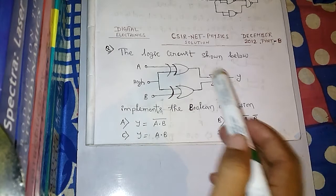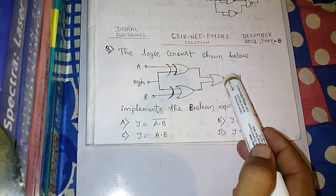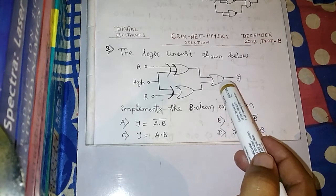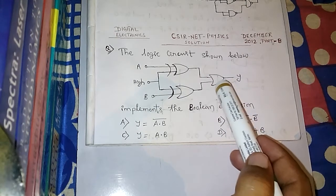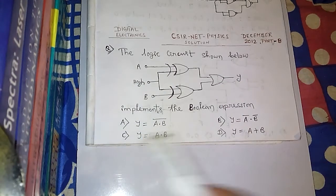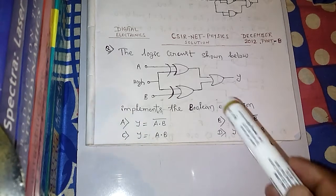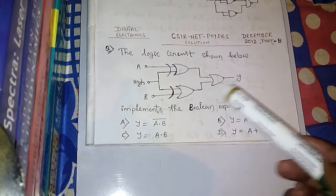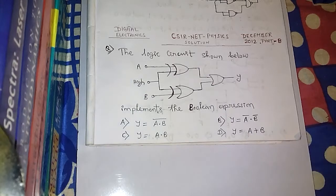First of all, we have to find out the boolean expression for this given digital circuit. If that boolean expression is very complex, then we have to simplify it using the laws of boolean algebra. Then we will check each boolean expression in the options to see if any of them matches with the simplified boolean expression of this circuit.